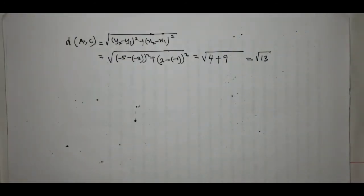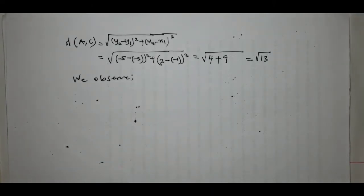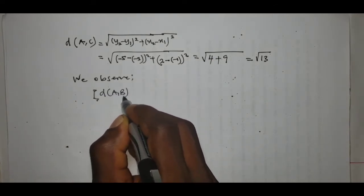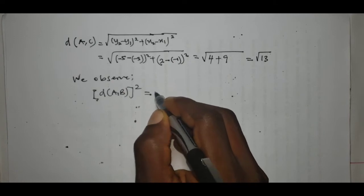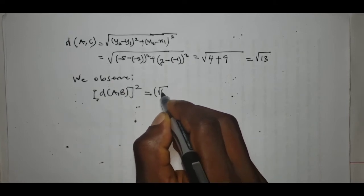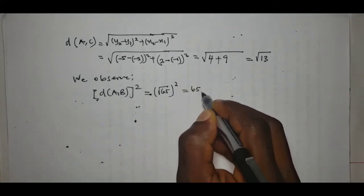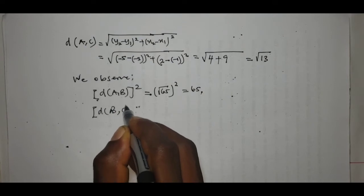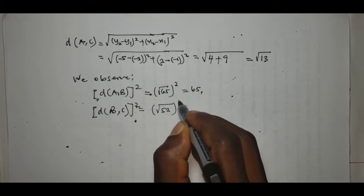The question is: what do we make of all we have done? We observe the following. The square of the distance between A and B is (root 65) squared, which is 65. The square of the distance BC is (root 52) squared, which is 52. And the square of the distance between A and C is (root 13) squared, which is 13.